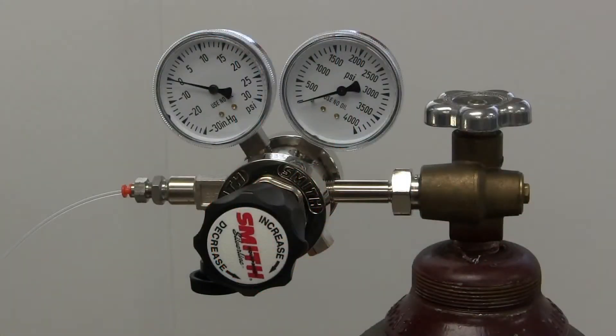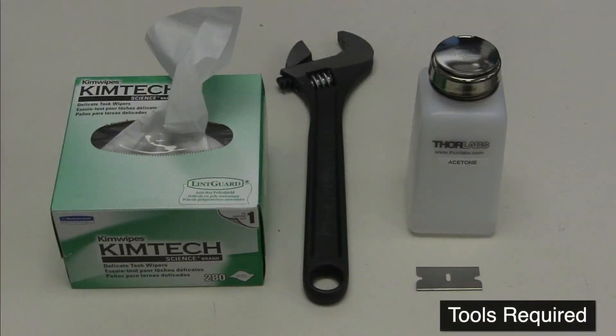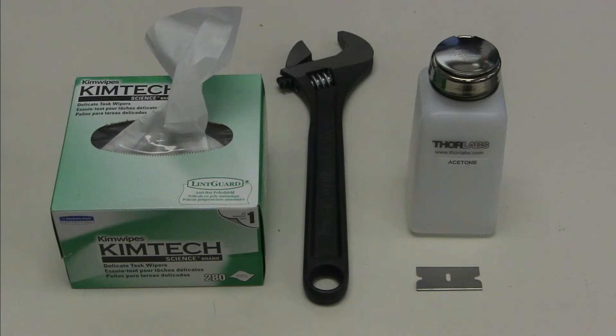In this video, we will demonstrate how to properly set up and connect an argon cylinder to the unit. You will need a razor blade, acetone, wipes, and an adjustable 10-inch wrench.